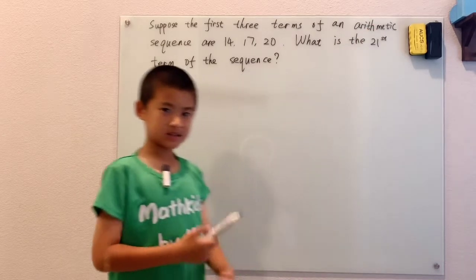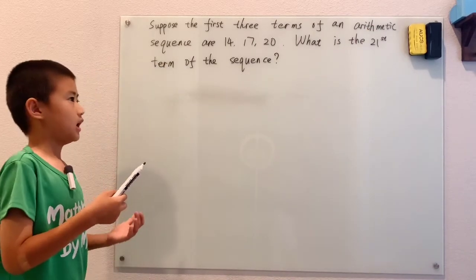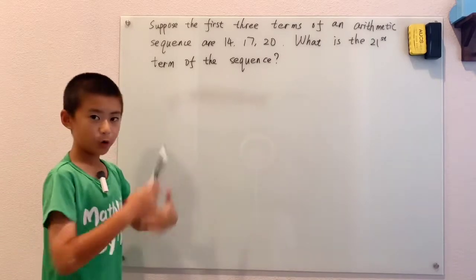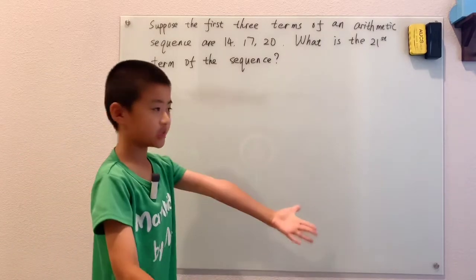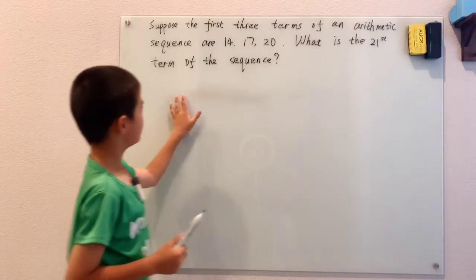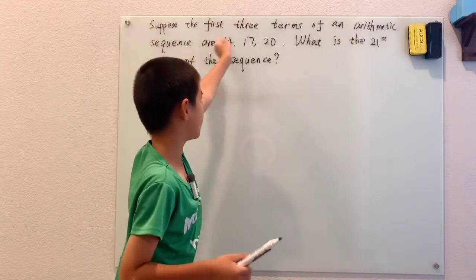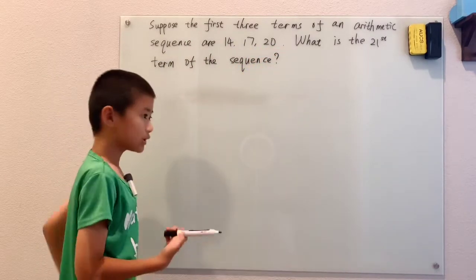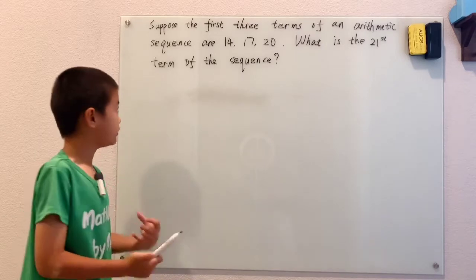Now first of all, arithmetic sequence, that just means a sequence where all the numbers are increasing by the same number or decreasing by the same number. So in this sequence, 14, 17, 20, the number we're increasing or decreasing by, we call that the common difference.